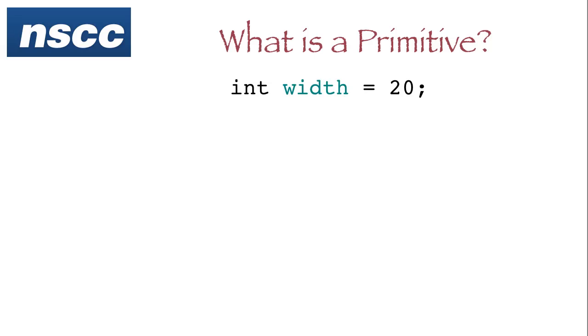First, we'll look at what is a primitive, and we're going to look at this traditional statement in Java. It starts with a declaration about what type of primitive we're actually going to store. And here we're going to store an integer. And we're going to reference it to the name width.